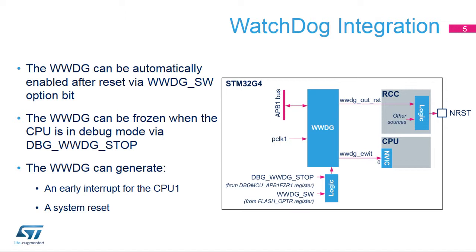The WWDG early interrupt output is connected to position 0 of the NVIC. It is possible to select hardware or software start via an option byte. In hardware mode, the WWDG can be automatically enabled after reset. The window watchdog is frozen when the system is in one of the stop modes, but can remain active when the product is in sleep mode. The WWDG performs a system reset handled by the RCC block when a timeout occurs or when the WWDG is refreshed outside the allowed window.